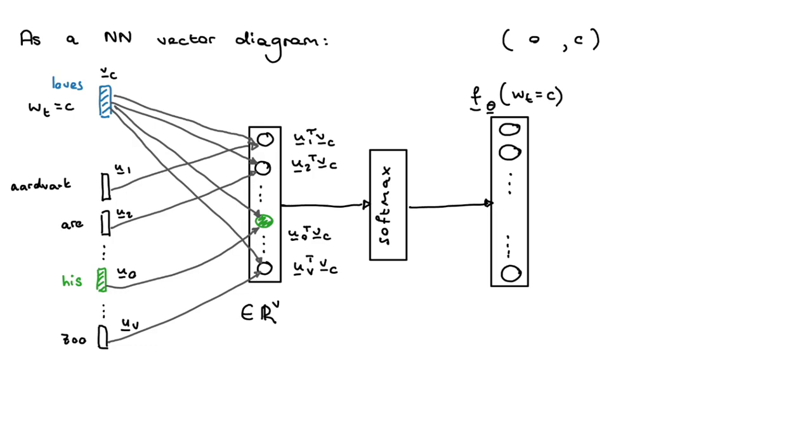One of the outputs in this enormous vector—one of them—corresponds to the green point, which is the current context word that I'm seeing. So one of these outputs, output number O, would correspond to that particular context word that I'm currently observing.